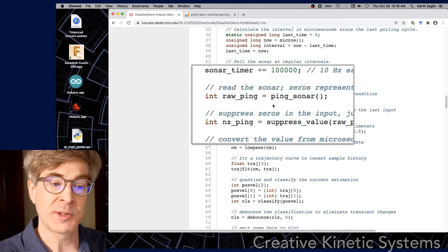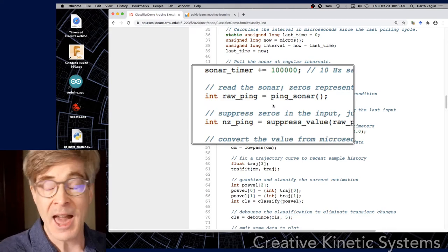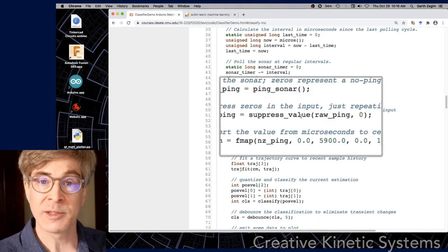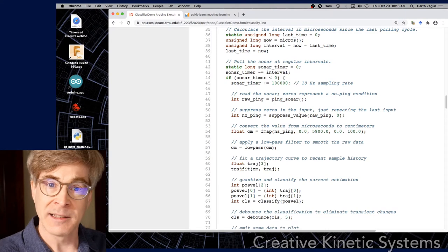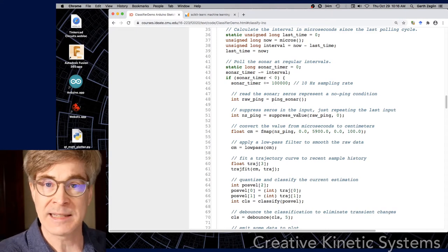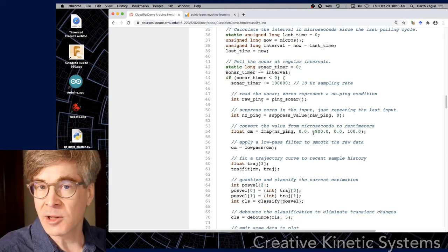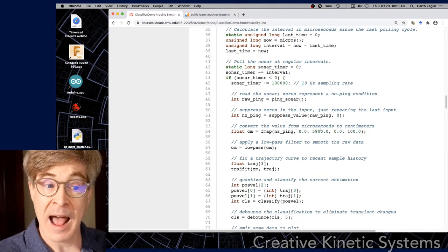So in this particular pipeline, a couple of things happen. First, it reads the sonar, which sometimes returns just a zero for no ping. Actually, quite often it gets no ping. So the first step is to suppress those zeros just as a basic sample and hold where the last non-zero value is repeated whenever it doesn't see something. The model in the world is unchanging. It's a default neutral, relatively neutral model for trying to fill in the gaps in the sensor data.